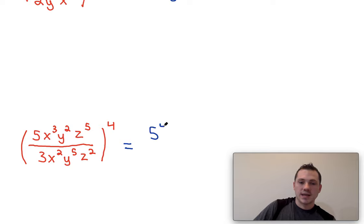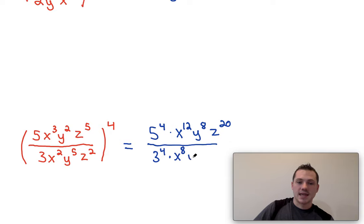So first, I'm going to have 5 to the fourth, times x to the twelfth, times y to the eighth, times z to the twentieth. This is going to be divided by 3 to the fourth, times x to the eighth, times y to the twentieth, times z to the eighth.